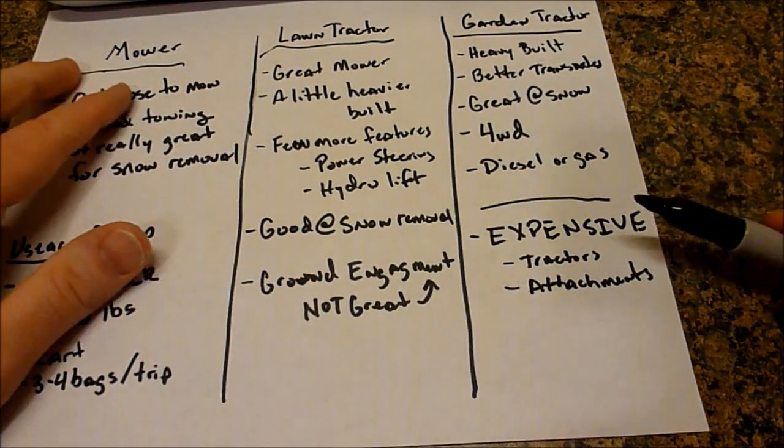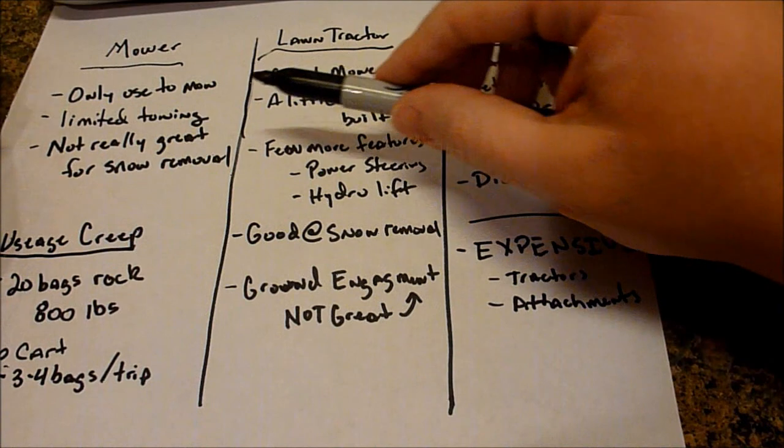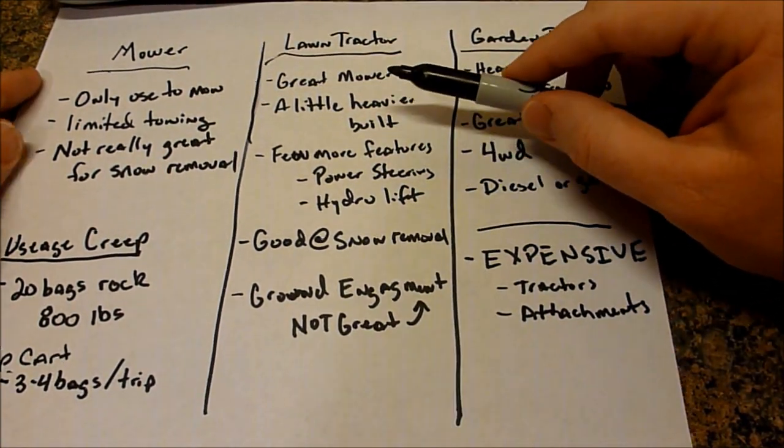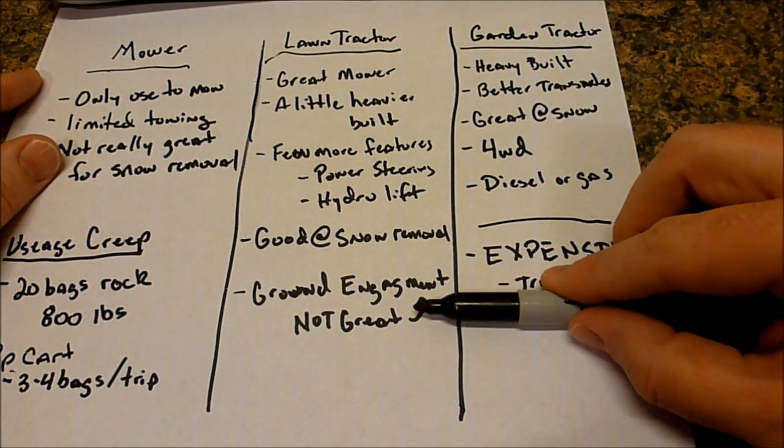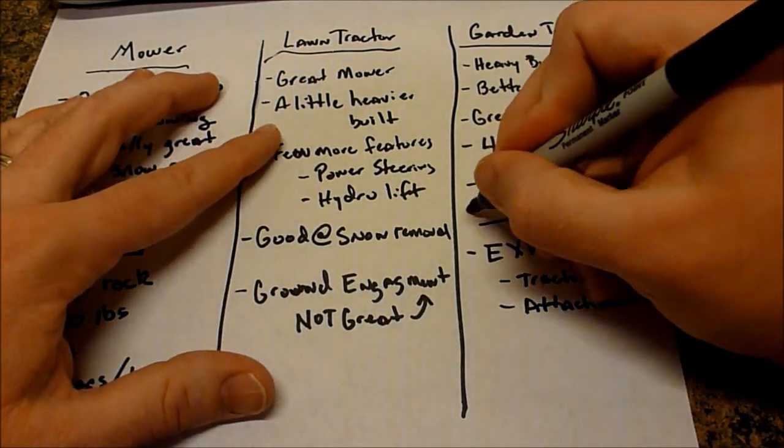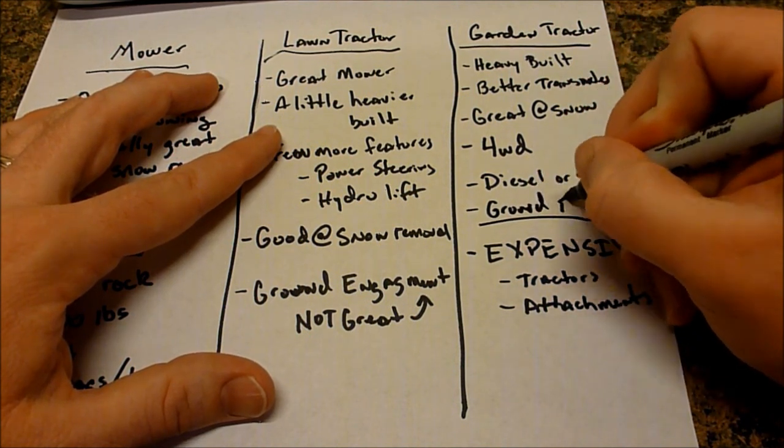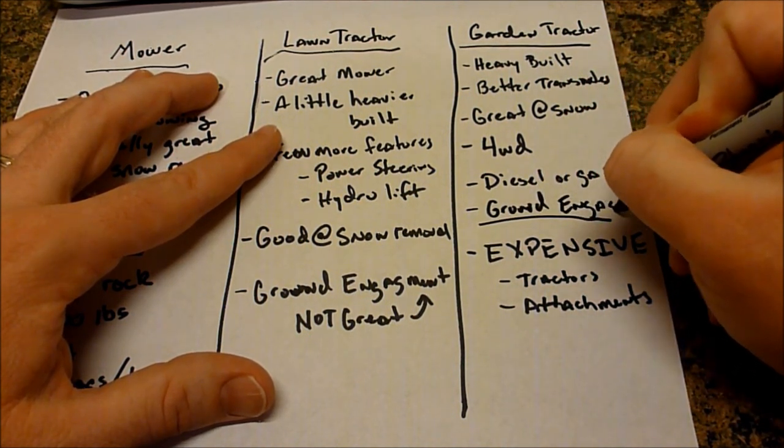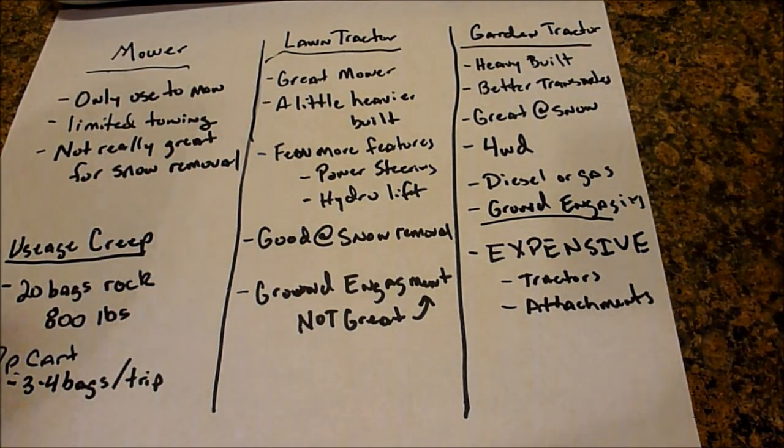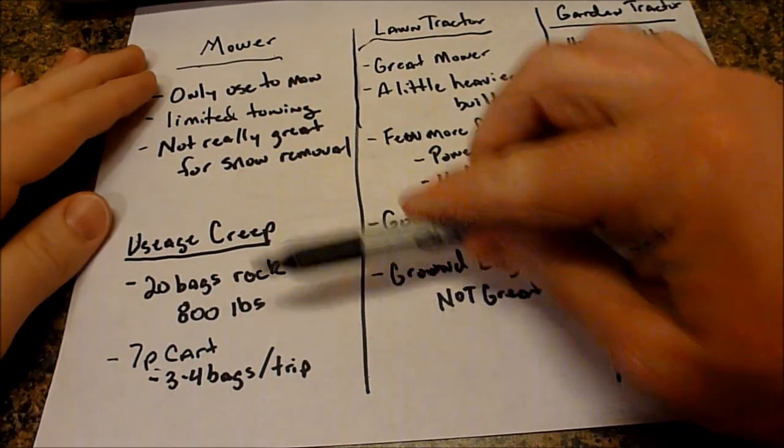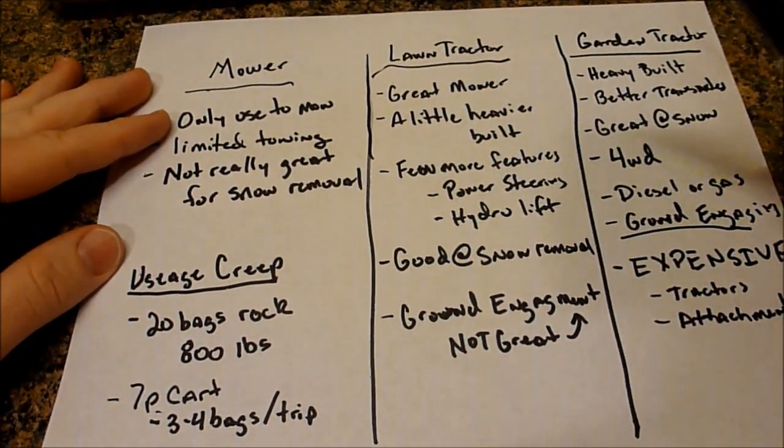Now, garden tractors are great for mowing. They're great for hauling. They're great for snow removal, but they're also designed for ground engagement. So if you want a tiller or something like that, you can put a tiller on garden tractors. So those are the three terms that we've gone over: mower, lawn tractor and garden tractor.